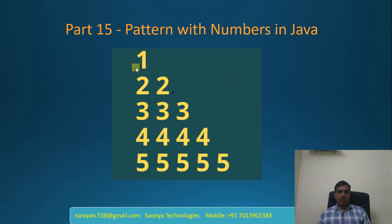In the first row we need to print 1. In the second row we need to print 2 values, both 2. In the third row we need to print 3, 3, 3. In the fourth row 4, 4, 4 and so on.